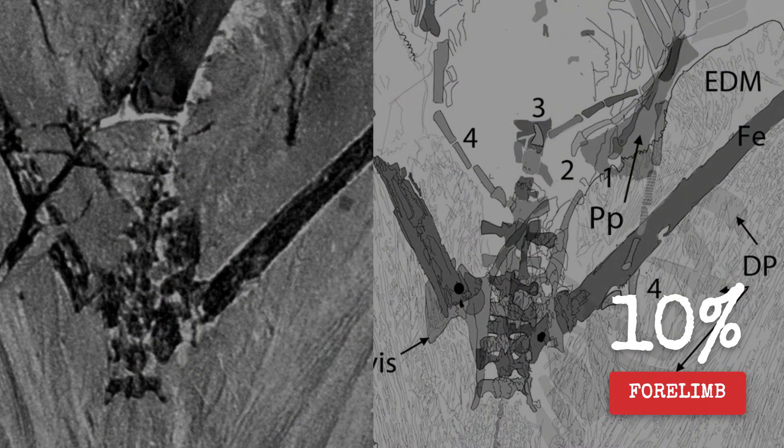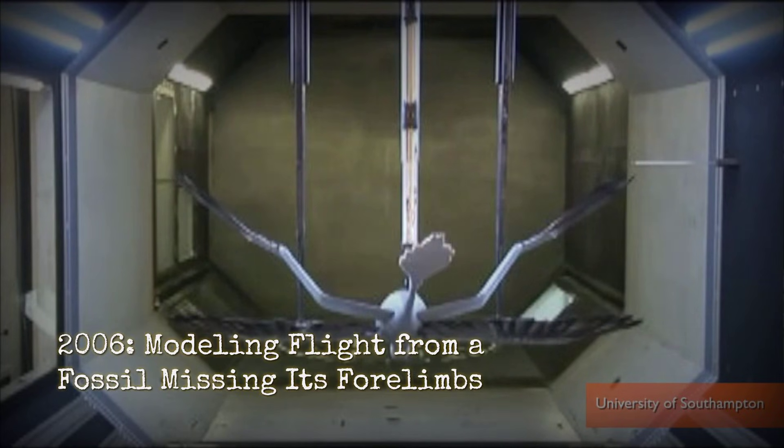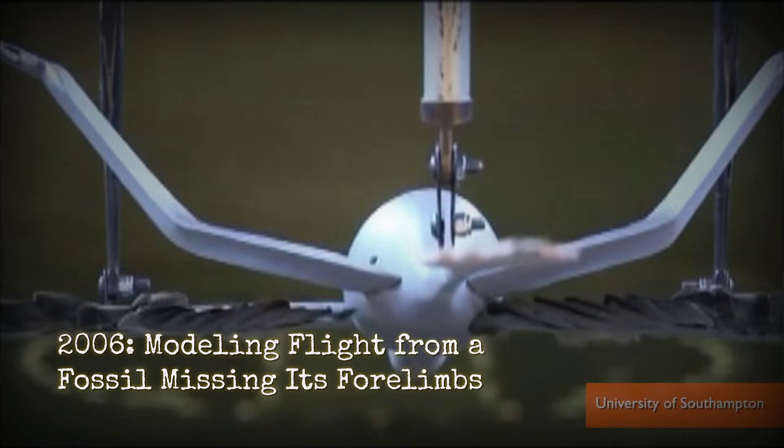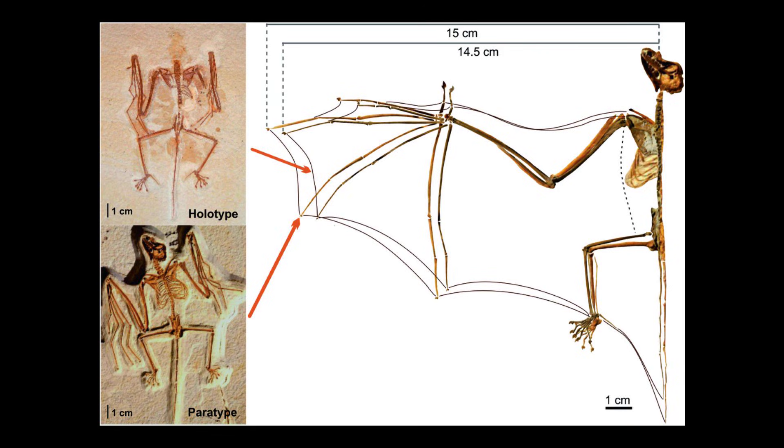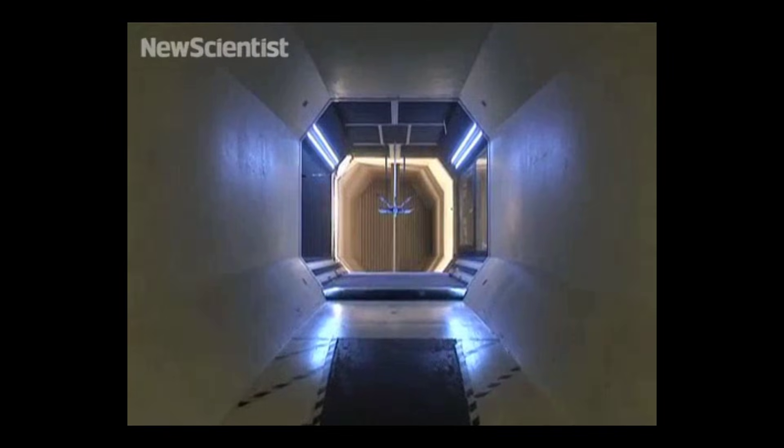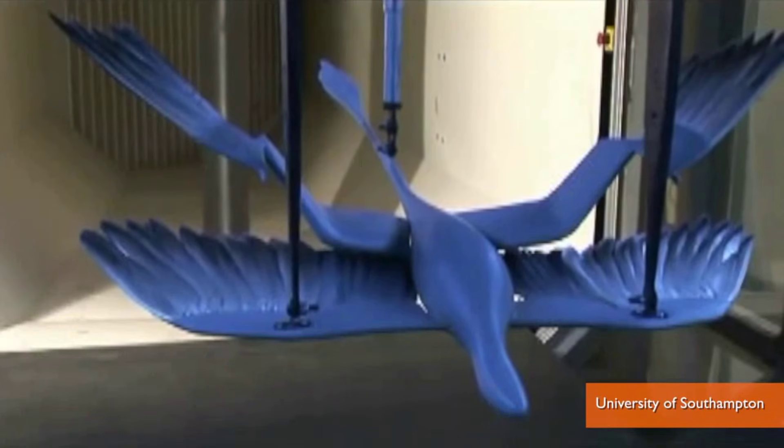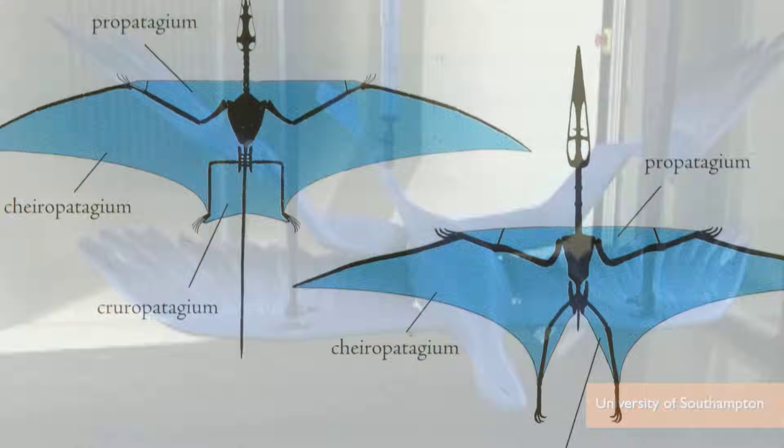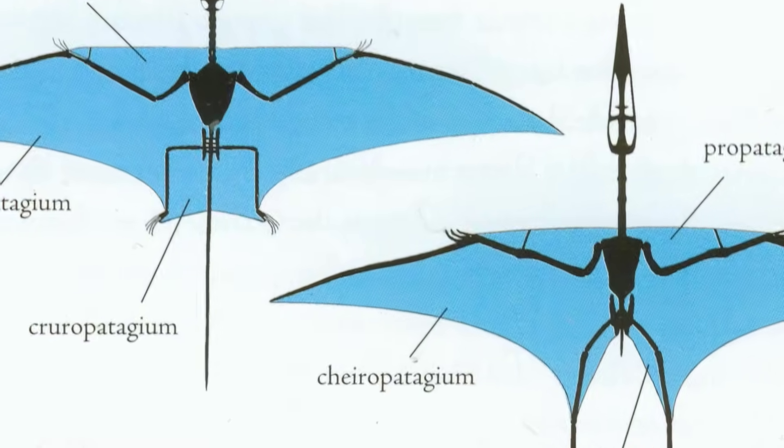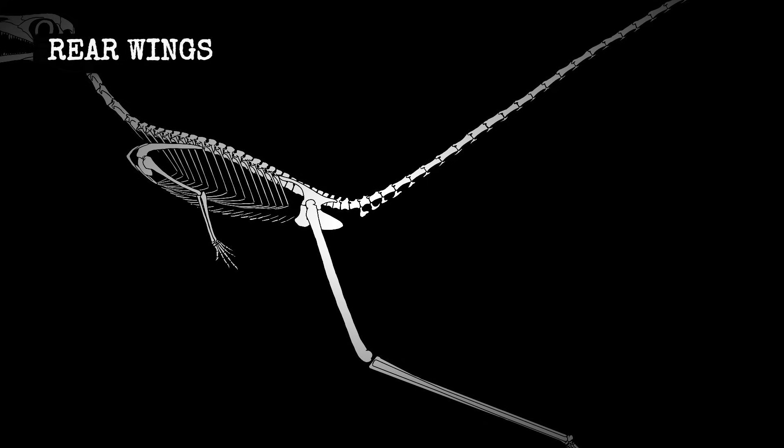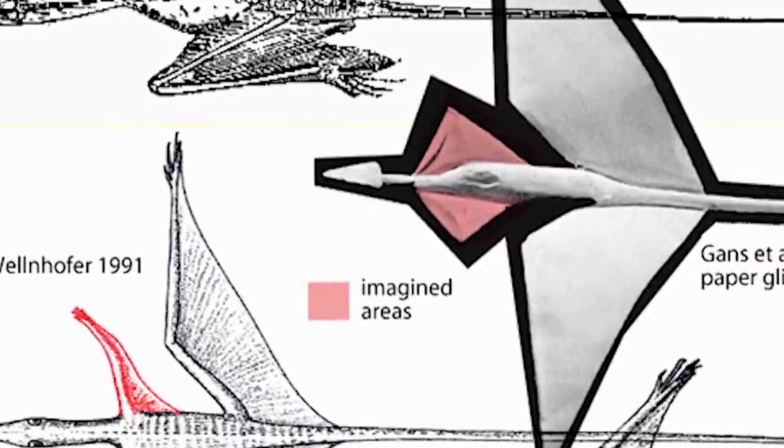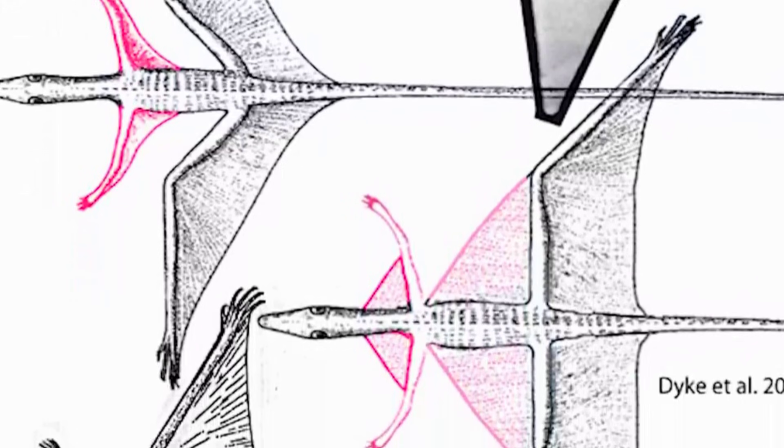Now examine the forelimbs. They are tiny, maybe one-tenth the length of the hind limbs. In 2006, researchers published a biomechanical analysis in the Journal of Evolutionary Biology. They modeled Sharovipteryx flight dynamics and discovered something terrifying. Without forewing membranes, this animal could not glide safely. The center of lift was too far back. All the wing surface was concentrated at the rear of the body. In flight, the animal would pitch forward uncontrollably. It could not stabilize, and it could not land without crashing.